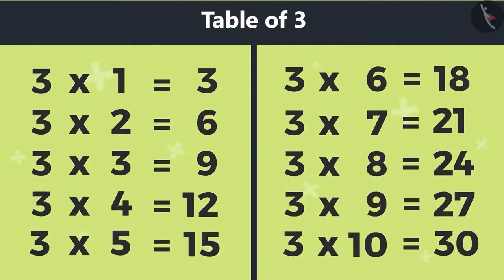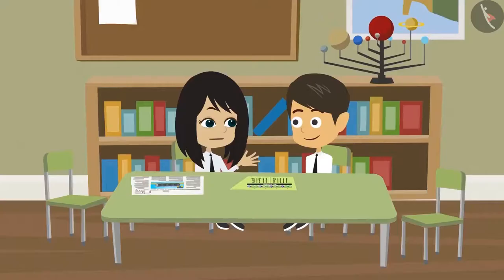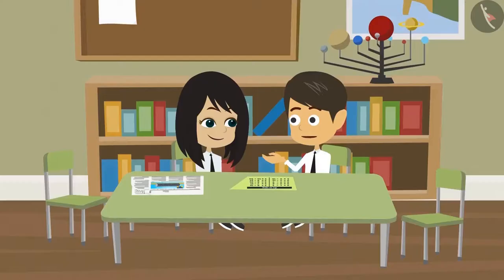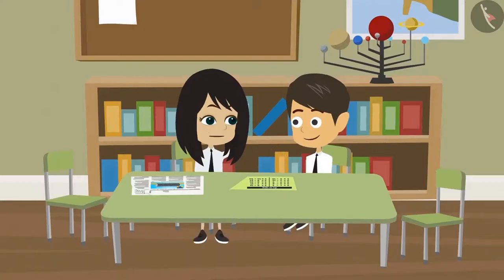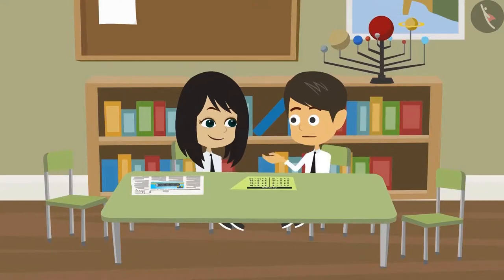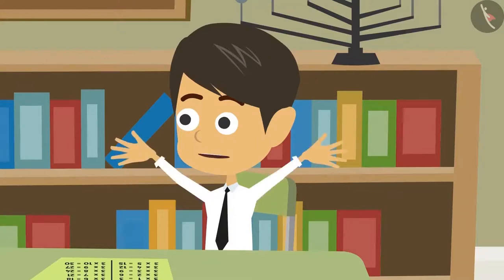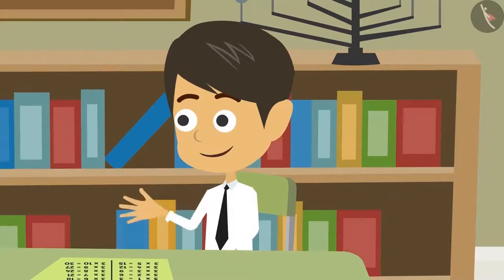Now let's memorize it, so that we don't have to do these calculations. Yes, okay. Three times one equals three. Three times two equals six. Hey, what are you doing? I am learning the table. No, you can't memorize tables like this. It is memorized in the form of a song. Like this.